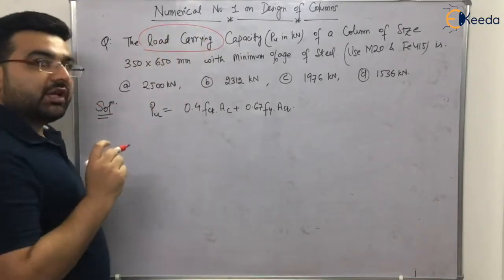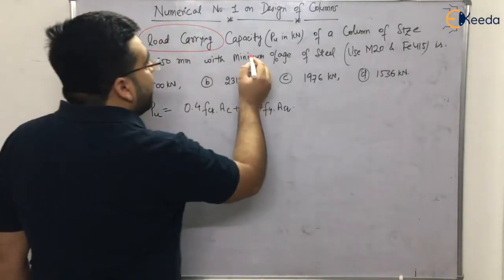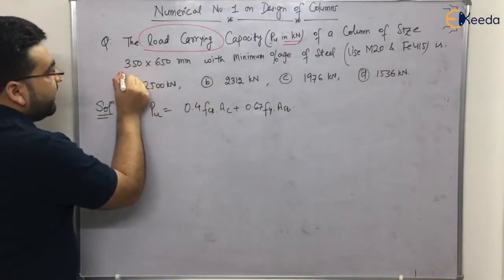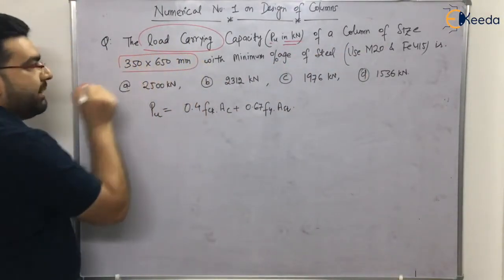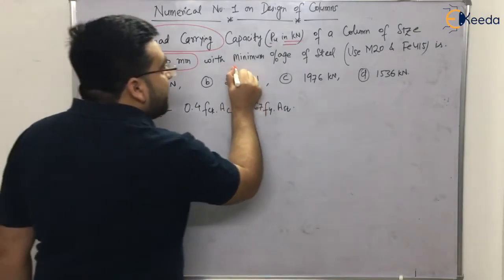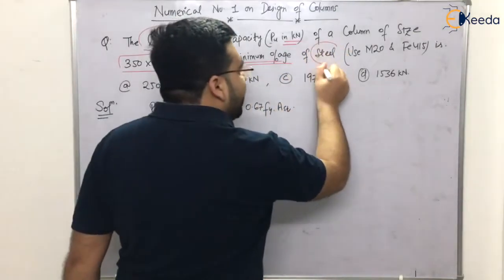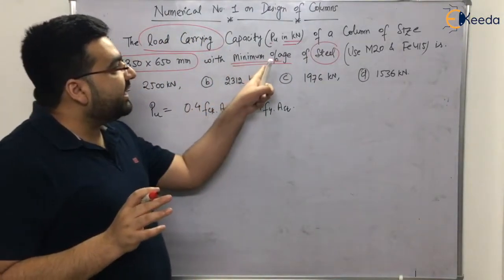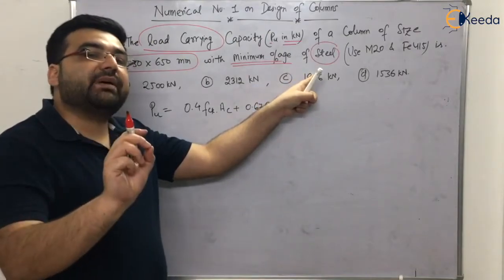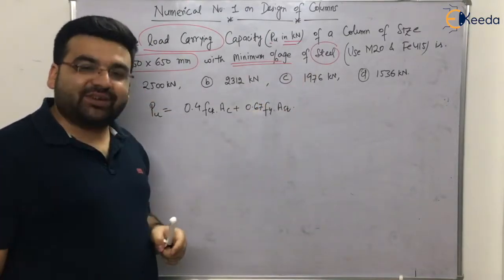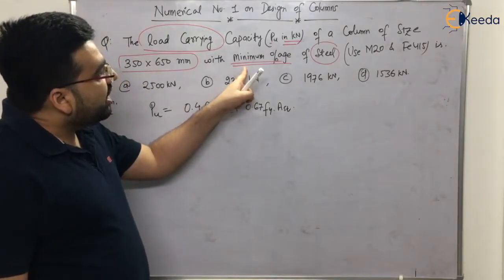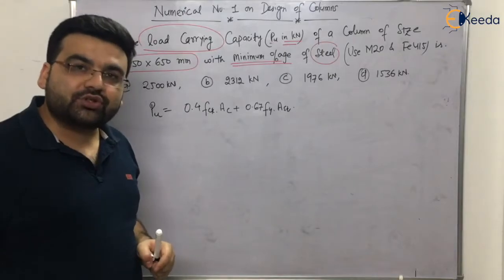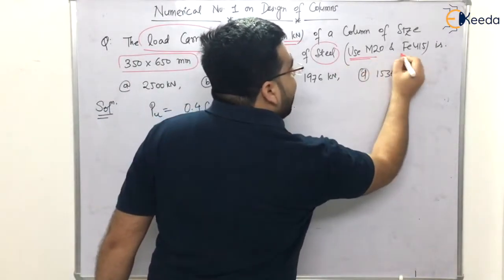The load carrying capacity in kilonewton of a column of size 315 × 650 mm with minimum percentage of steel. What is the minimum percentage of steel in a column? 0.8 percent of the gross cross-sectional area. In this question, the IS 456 provision has also to be used. Use M20, FE 415.